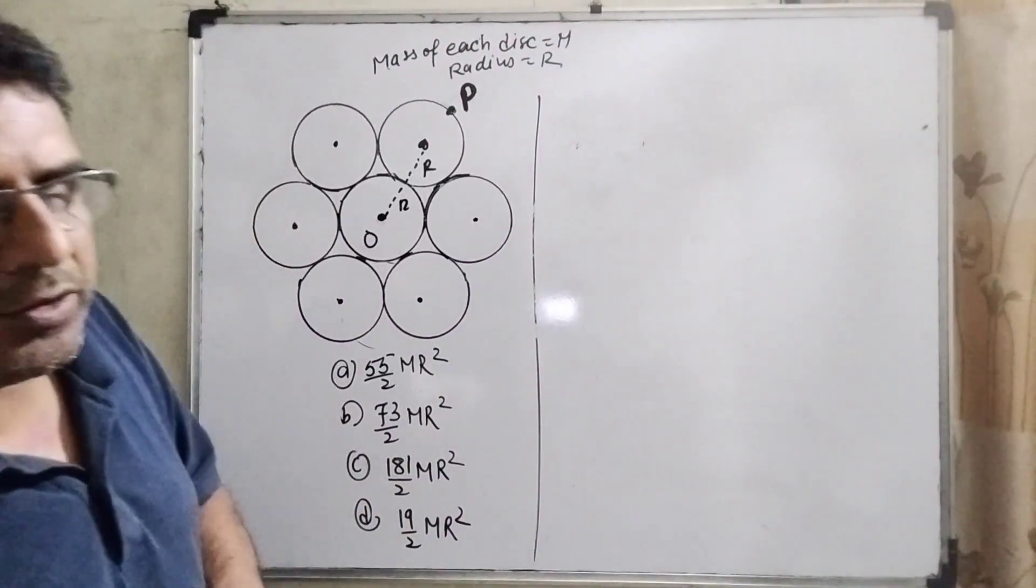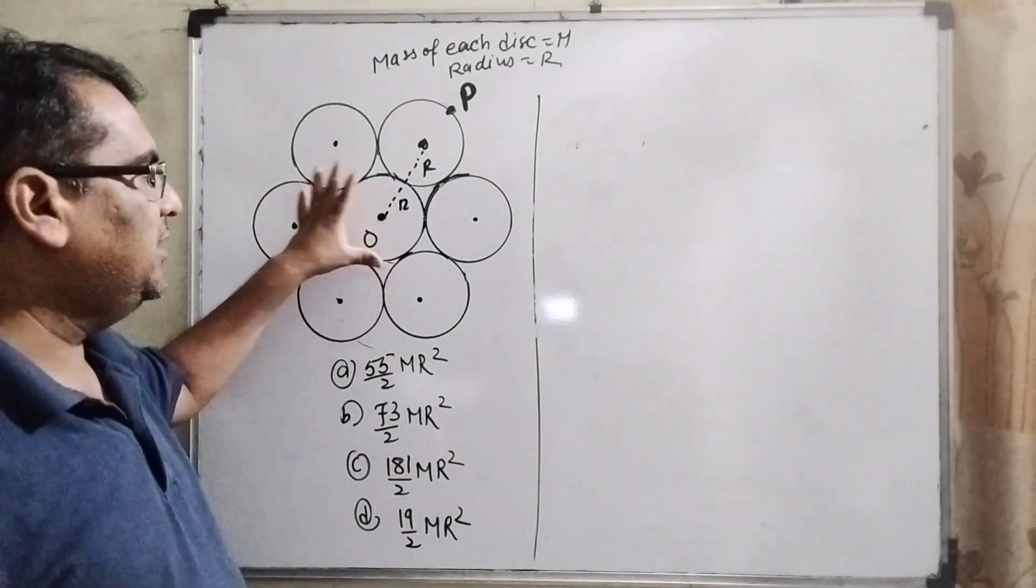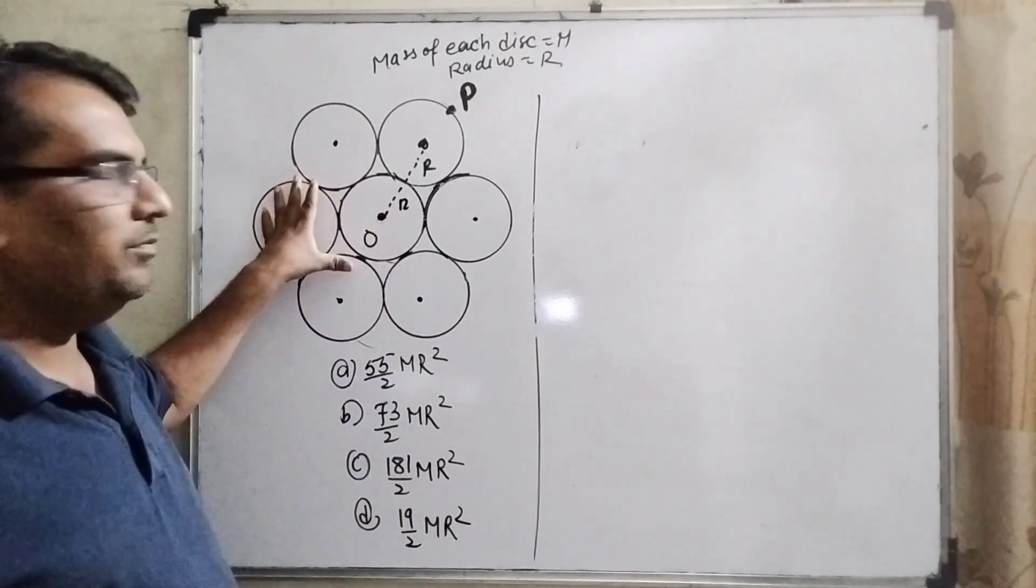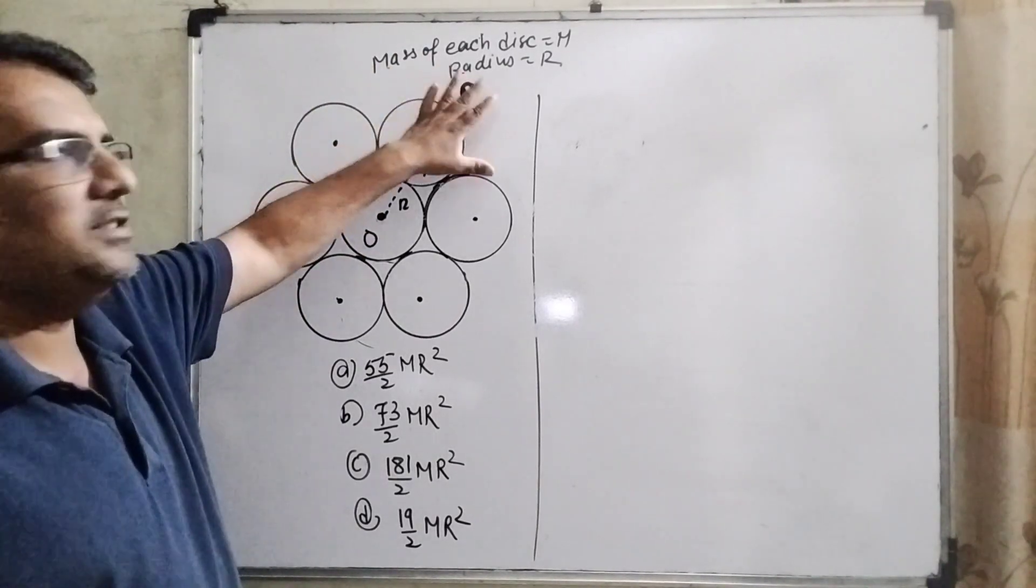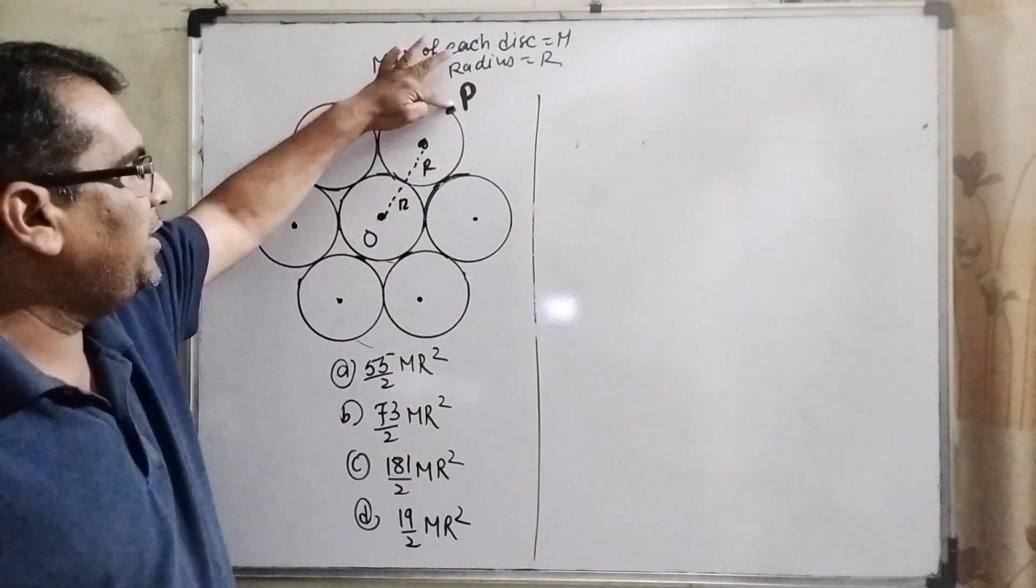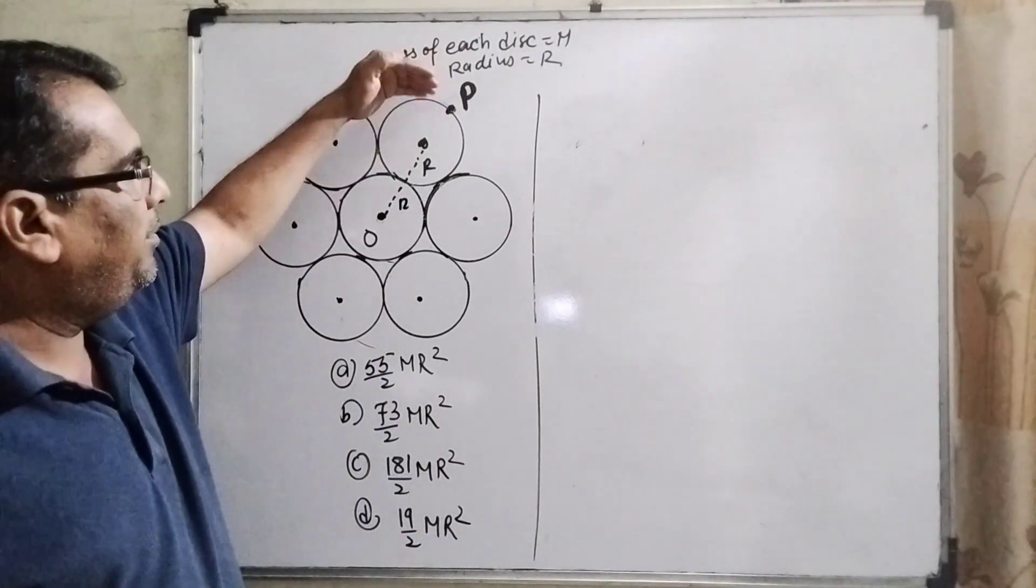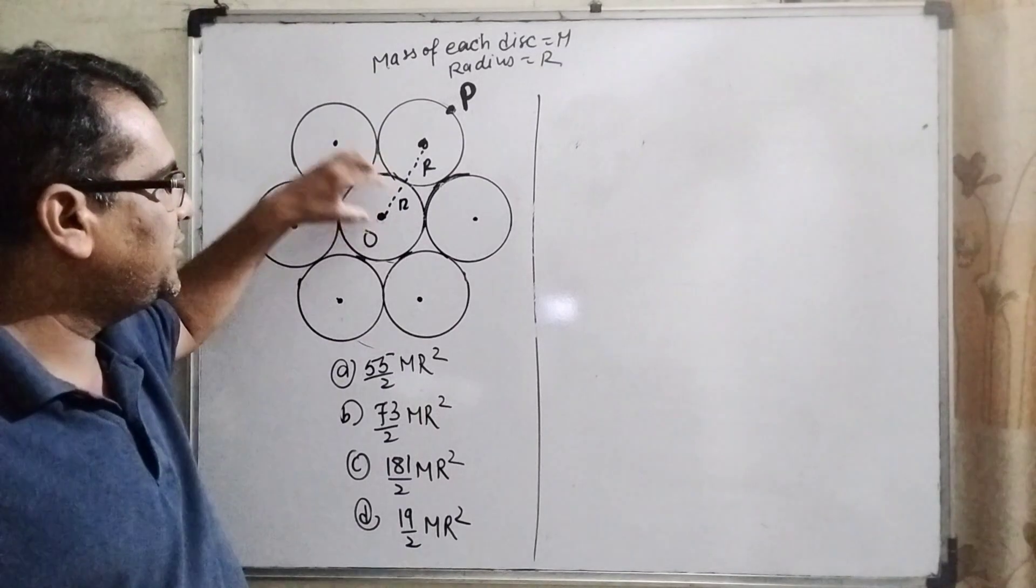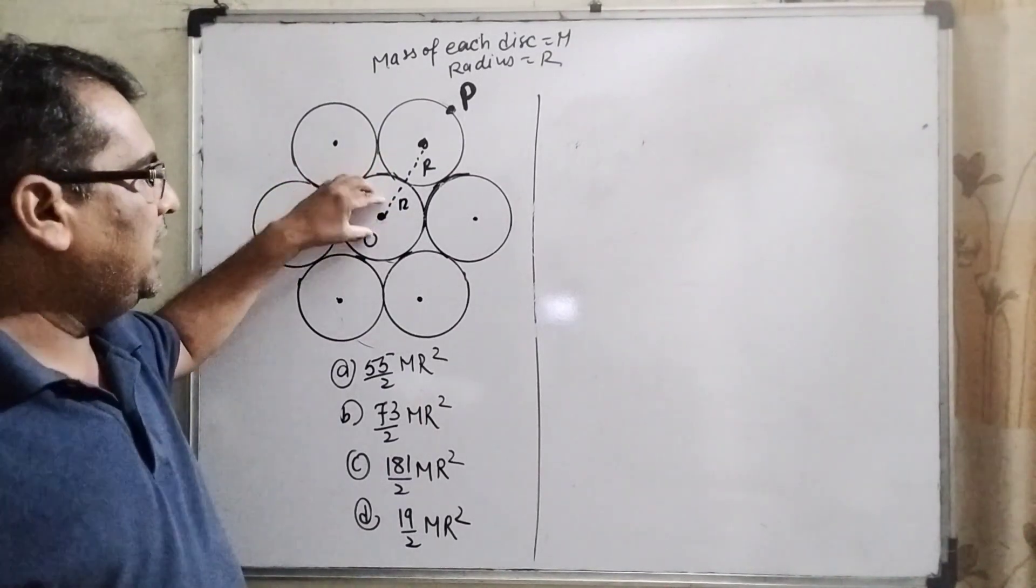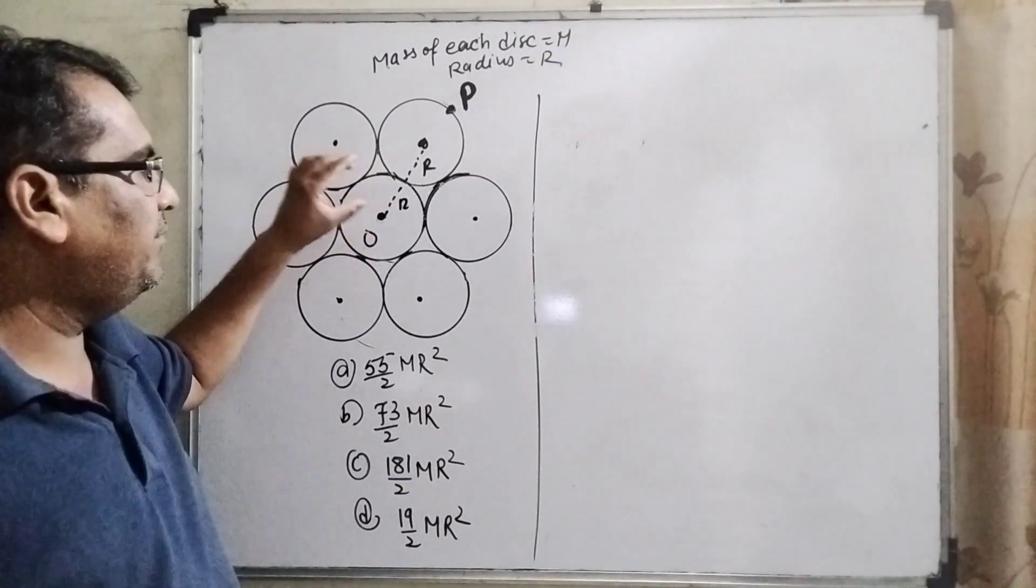Okay, here the question says - you can see there are seven identical discs welded to each other, each having mass capital M and radius R. We have to find the moment of inertia at point P. But before that, we need to find the moment of inertia at the center. So let us first find the moment of inertia at the center.